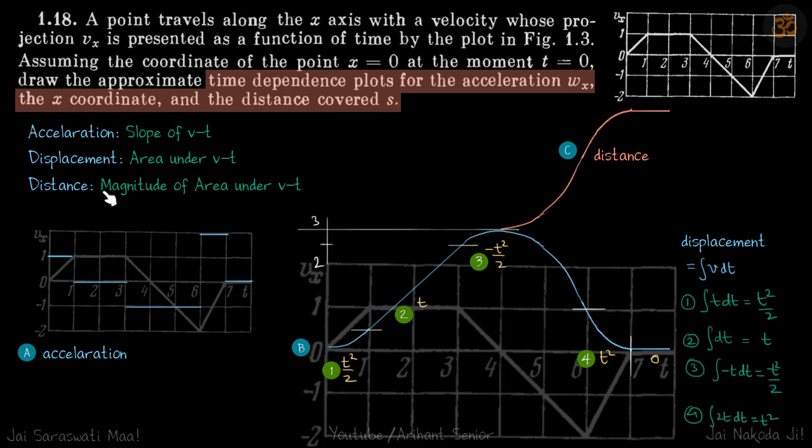Let's do the acceleration first, the slope of v-t. You can see here that velocity is 1 when time is 1, so the slope is 1, 45 degrees, which means acceleration is initially 1. Then the velocity is constant, which means acceleration is 0 since the slope is 0.